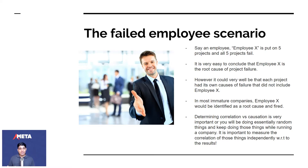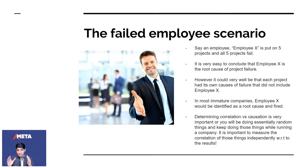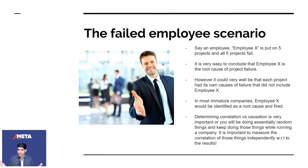In a management scenario, this happens very often. Say there's an employee X who's put on five projects and all five fail — it's very easy to conclude that employee X is the root cause. However, it could be that each project had its own cause of failure that did not include employee X. In most immature companies, employee X would be identified as the root cause and fired. Determining correlation versus causation is very important, or you will keep doing random things.